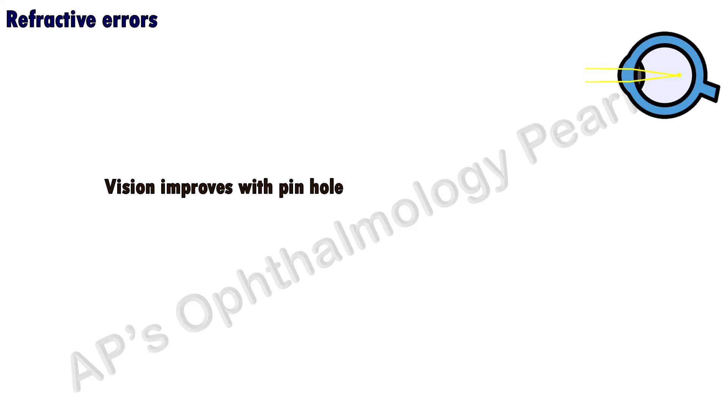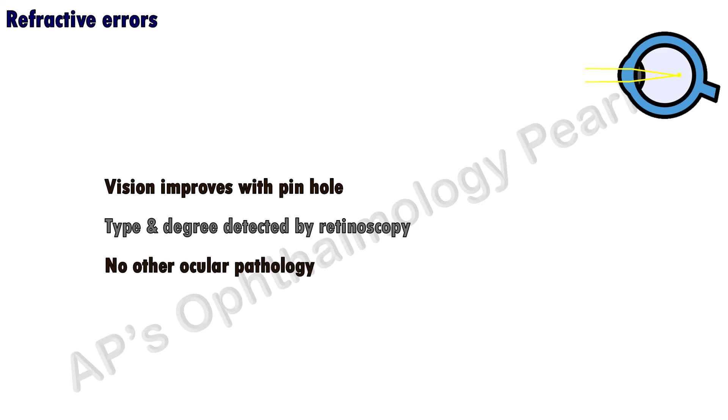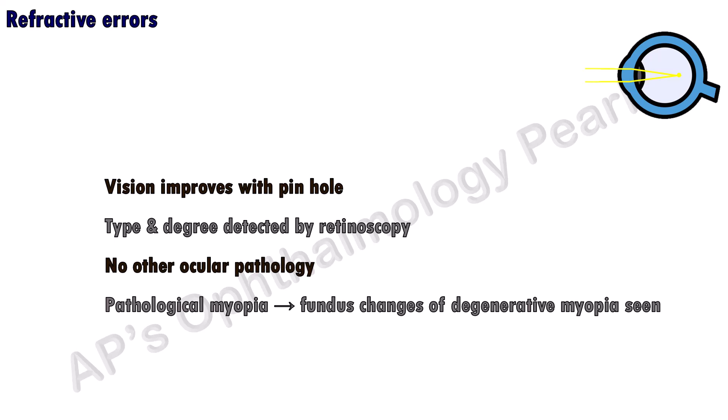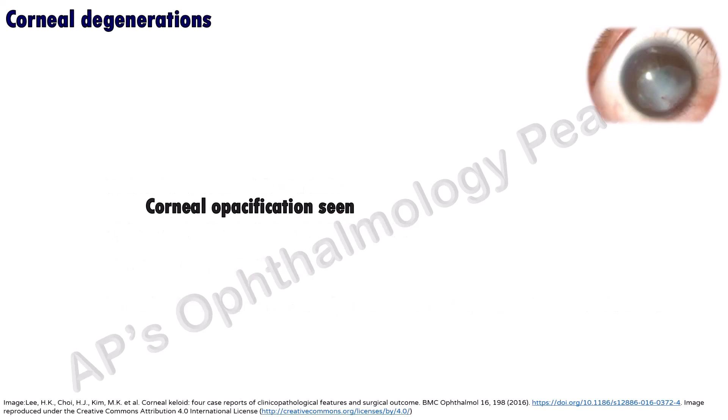Progressive increase in the dioptric power of refractive errors can give rise to a gradually progressive painless diminution of vision. Improvement with pinhole is the key to rapid detection of a refractive error. While pinhole improvement confirms the presence of a refractive error, the exact type and degree can only be determined by refraction. Isolated refractive errors will have no other pathology, unless there is pathological myopia, in which case fundus features of degenerative myopia will be seen.